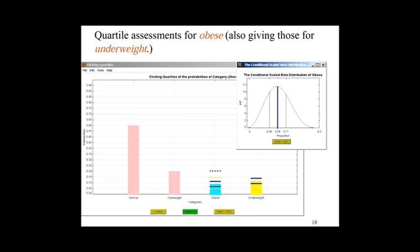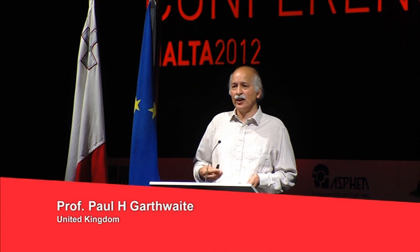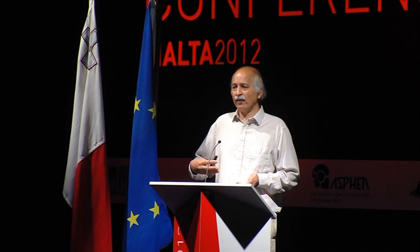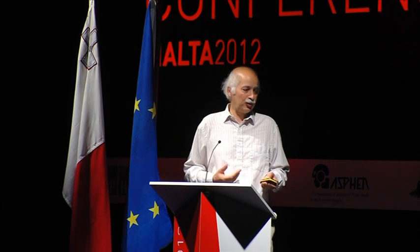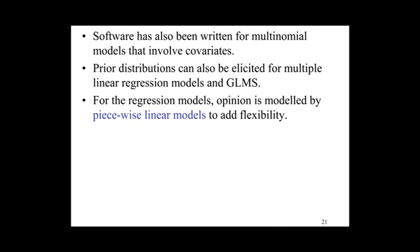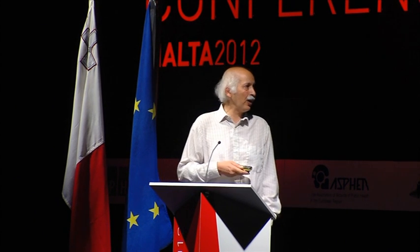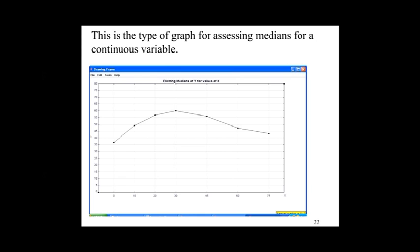After that, you provide feedback: you've got assessments from the person and you want to present information about whether the consequences of their expressed judgments relate to their true beliefs. You've been getting conditional assessments — 'supposing the first was 0.6, what are the other categories?' — now you present unconditional probabilities and ask if these match their opinions. They can make adjustments, and at the end we have a distribution. We also have methods for including covariance between categories, methods for generalized linear models, and piecewise models that pick out a number of knots and allow a much more flexible shape rather than a single straight line.